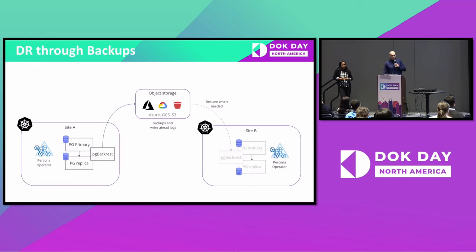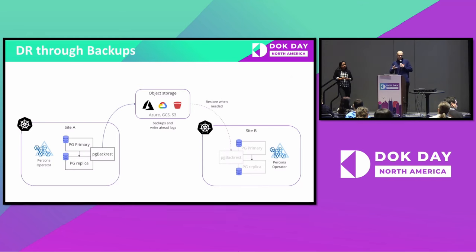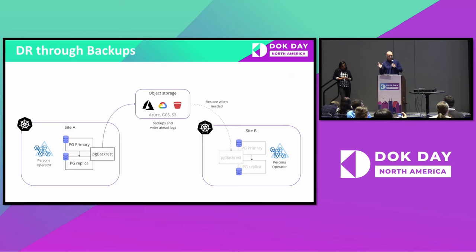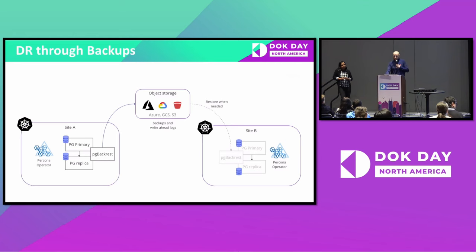For disaster recovery through Percona operators, there are a couple of approaches. The simplest is through backups: you have an operator running on site A in one Kubernetes cluster and an operator in site B in another. PG Backrest uploads your backups to object storage — GCS, S3, whatever — and if site A fails, you restore from backups to site B. This is suboptimal in terms of time, but if your SLAs allow 24 hours of downtime, it can work.